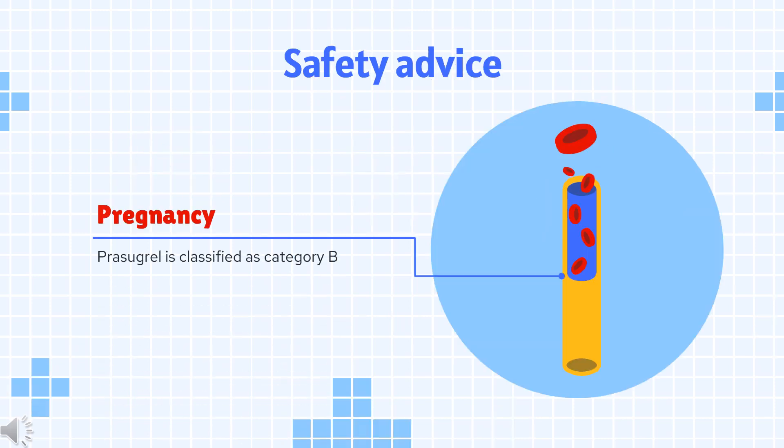Safety advice: Prasugrel is classified as pregnancy Category B. Toxicology studies performed in animal models did not show any adverse fetal effects. However, there are no studies evaluating the use of Prasugrel in human pregnancy.